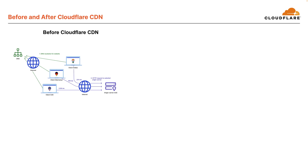From a security perspective, the origin server is also vulnerable to DDoS attacks at both the infrastructure and application layer. And in terms of availability, if the origin server temporarily goes offline, all content is inaccessible to users.